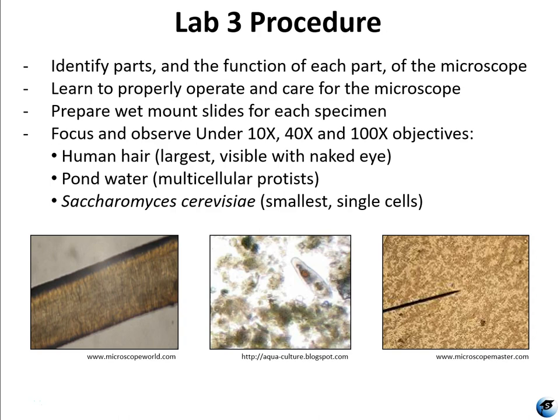First, observe the human hair because it's the largest. Then the pond water — which is a kind of grab bag where you could have any number of things; the most common ones will be shown in a moment. The pond water organisms are much smaller than human hair, but we are looking at multicellular eukaryotic organisms that are alive and swimming around, which is really fun. The last thing to do, because it's the hardest, is the yeast, as they are very small single-celled organisms.